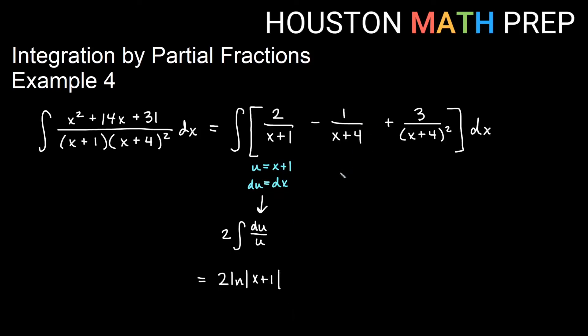For the next one, if u is x plus 4, we get a similar thing. du is going to be dx, and that will lead us to minus du over u here. That gives me minus ln of absolute value of u, and in this case u is x plus 4.